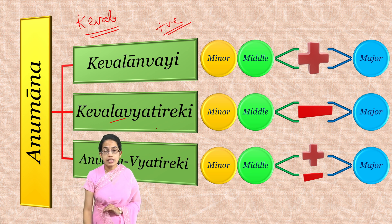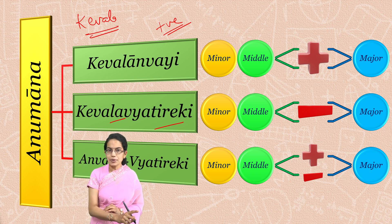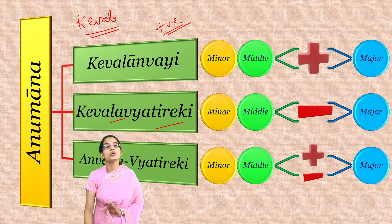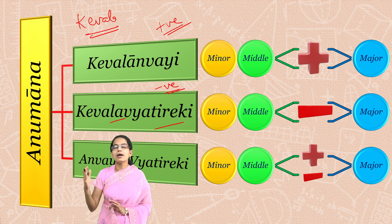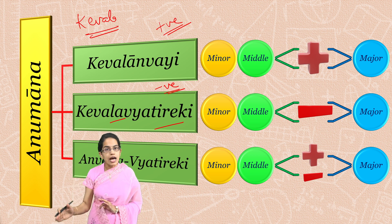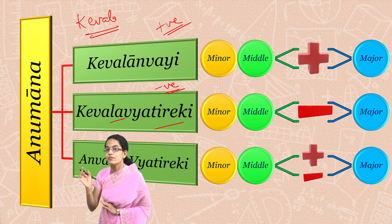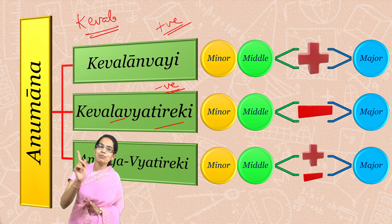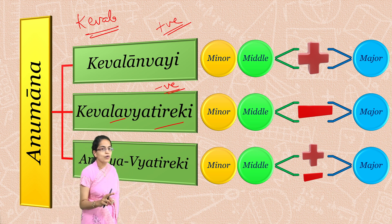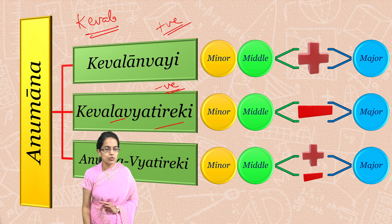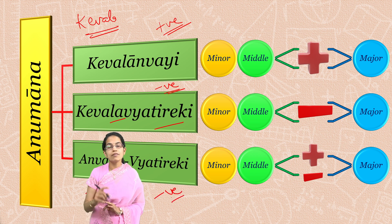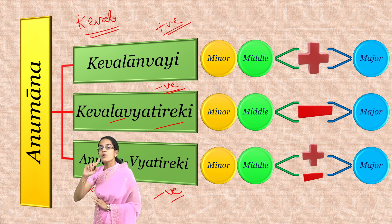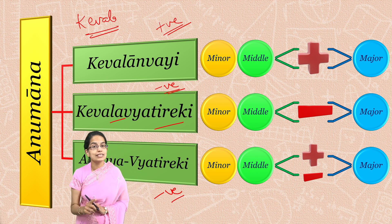The next is Kevalya Vyatireki. Kevalya means complete or whole, and Vyatireki means to create difference or a negative relation. Here we have a complete negative relation between the Hetu and the Sadhya, and we cannot establish a positive relation with the same example. We also have a unique case known as Anvaya Vyatireki, where both positive and negative relations can coexist with the same example.